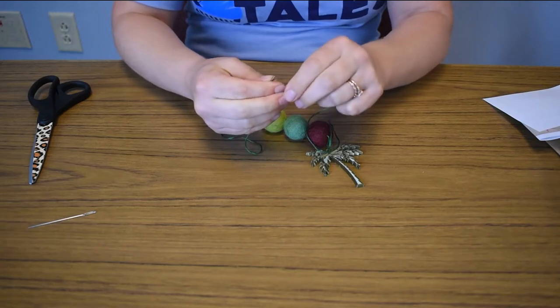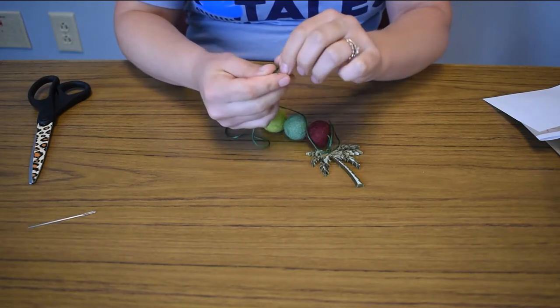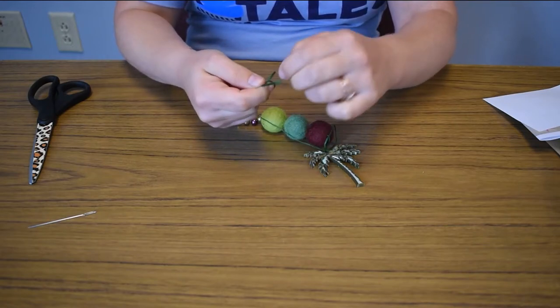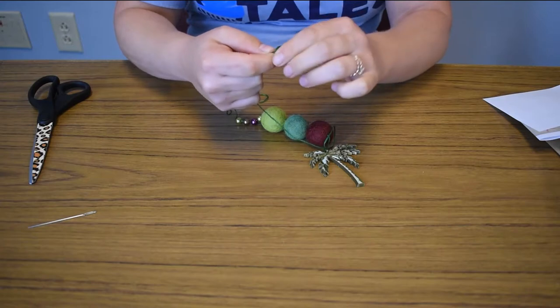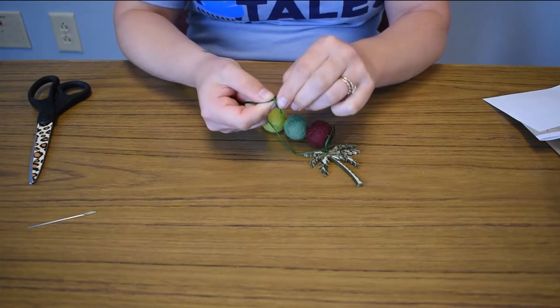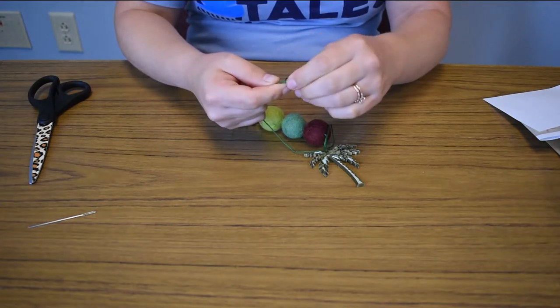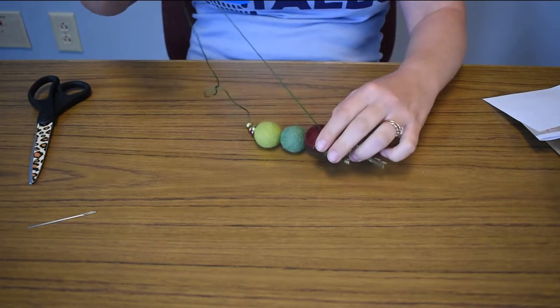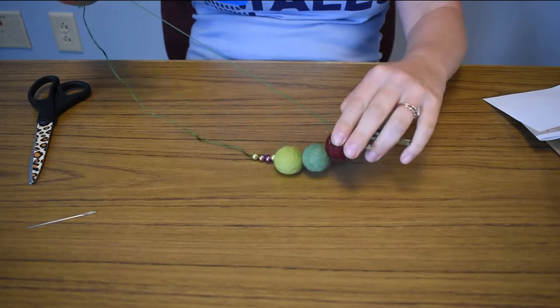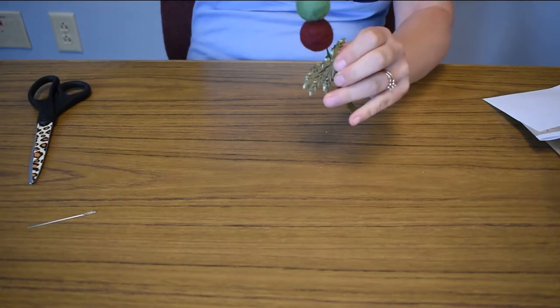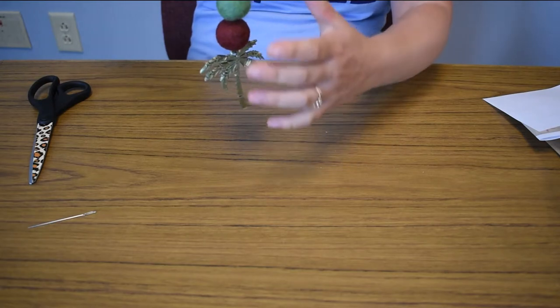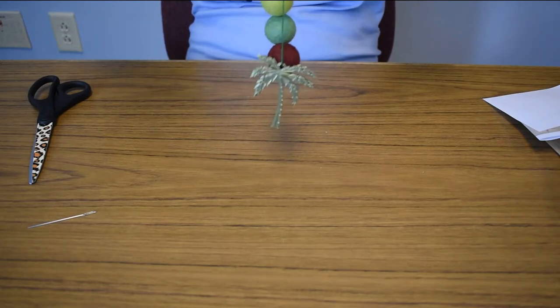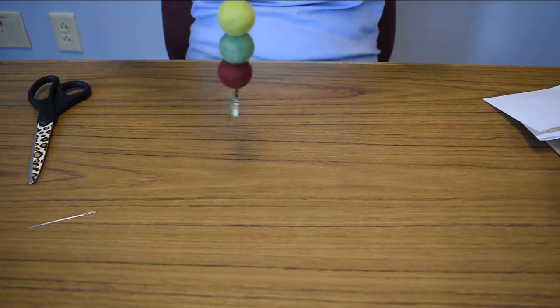So I'm just going to take my ends now. And I'm just going to tie them together like this. And then I'm just going to make it as close to the end as I can. And then I'm going to pull my string. Just like that. And then this will just go over your rear view mirror in your car.